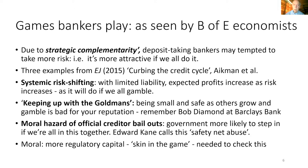The first game is systemic risk shifting. All the banks are protected by limited liabilities, so expected profits increase as risk increases — as it will do if we all gamble. The second game is keeping up with the Goldmans. Being small and safe as others grow big and gamble is bad for your reputation — just remember Bob Diamond when he was CEO at Barclays Bank. Thirdly, moral hazard of official creditor bailout: governments are more likely to step in if we're all in this together. Edward Cain calls this safety net abuse.